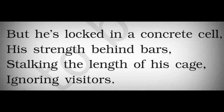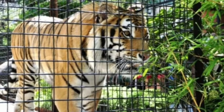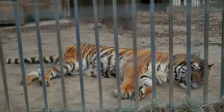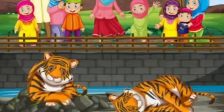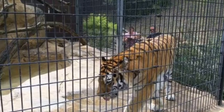Fourth stanza: But he is locked in a concrete cell, his strength behind bars, stalking the length of his cage, ignoring visitors. In this stanza, the poet takes us back to the reality of the tiger's life in a cage in the zoo. The tiger is caged in a small concrete cell made of strong building materials. The tiger's strength is kept behind bars, and he just walks in the cage, ignoring the people who come to the zoo because his power is restricted. He quietly walks without paying any attention to the visitors.